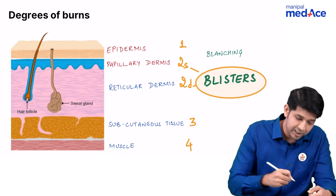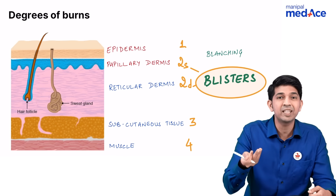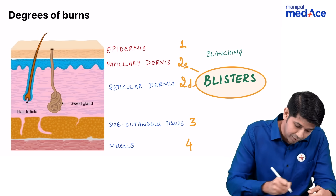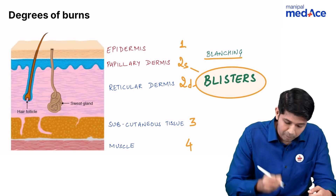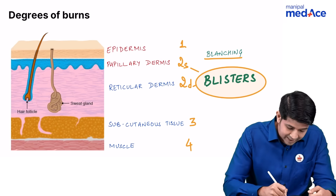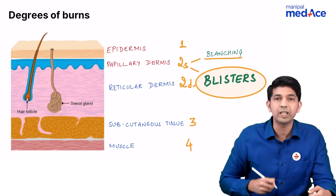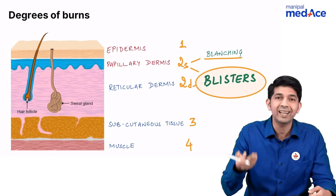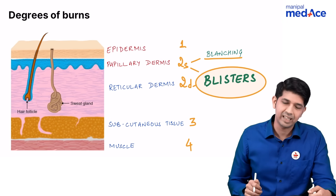So how do you differentiate between second degree superficial and deep? That is with the help of blanching. If blanching is present, it is second degree superficial. If it is not there, it is second degree deep.